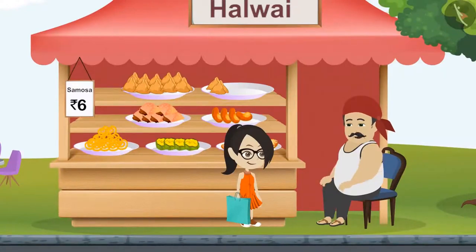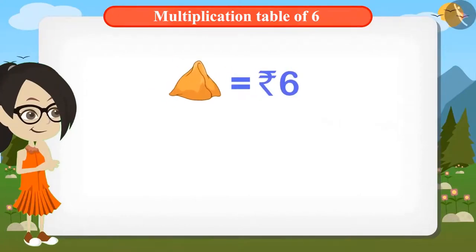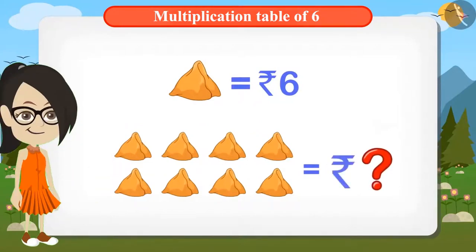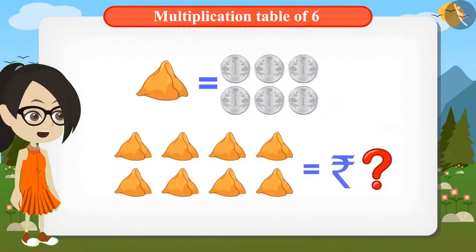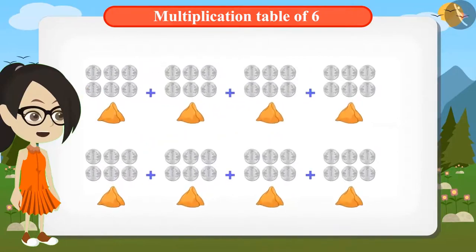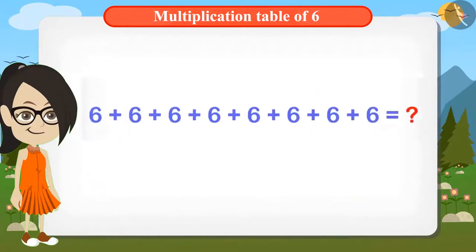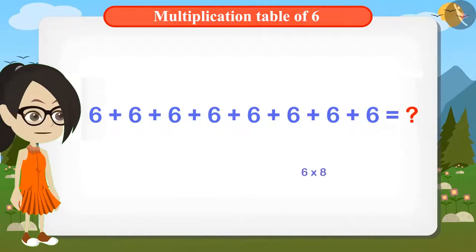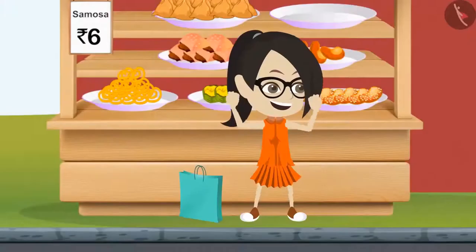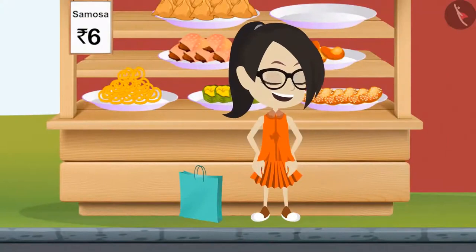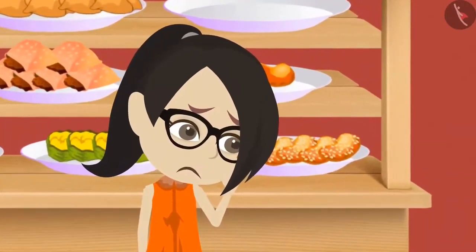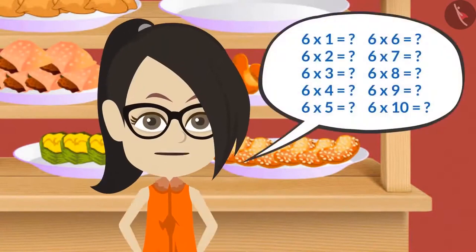Vandana is trying to find out what is the cost of 8 samosas if one samosa costs 6 rupees. One samosa costs 6 rupees. To find the cost of 8 samosas, let me add 6 rupees 8 times. Multiplying 6 by 8 is better than adding 6 repeatedly 8 times. But there is a problem — I do not know the table of 6. If I had known the table of 6, I could have immediately calculated the cost of 8 samosas.